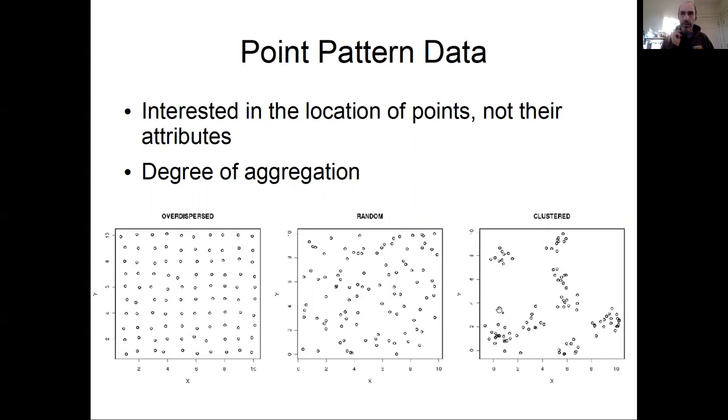So in these three panels at the bottom, what we can see are randomly generated examples of data that is truly spatially random. The points were generated without reference to each other. An over dispersed data set, where they're much more regular than you would expect by chance. In this case, roughly on a one unit grid with some noise.